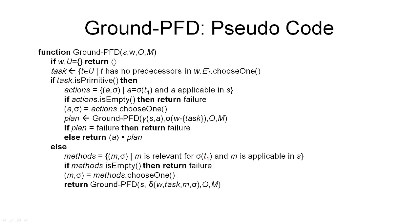Here is the pseudocode for the ground PFD algorithm. PFD: FD still stands for forward decomposition, but P because it's partial order. The given network can be partial order and the given methods can be partial order. The function ground PFD takes as input a planning problem consisting of an initial state, an initial task network, a set of operators, and a set of methods. It differs from TFD because it takes a task network as input, not just a sequence of tasks, but otherwise the structure is very similar.